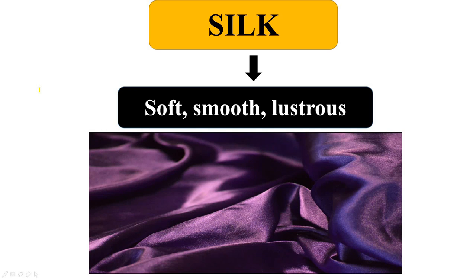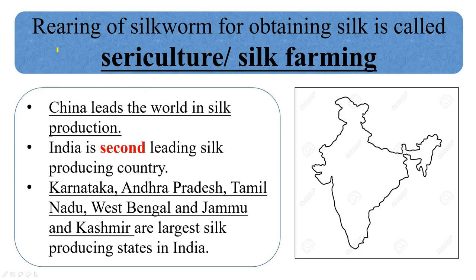We have completed wool fiber. Now we will study about silk fiber — the soft, smooth, and lustrous silk fiber. Rearing of silkworms for obtaining silk is called sericulture or silk farming. China leads the world in silk production, and India is the second largest silk-producing country. In India, Karnataka, Andhra Pradesh, Tamil Nadu, West Bengal, and Jammu and Kashmir are the largest silk-producing states.